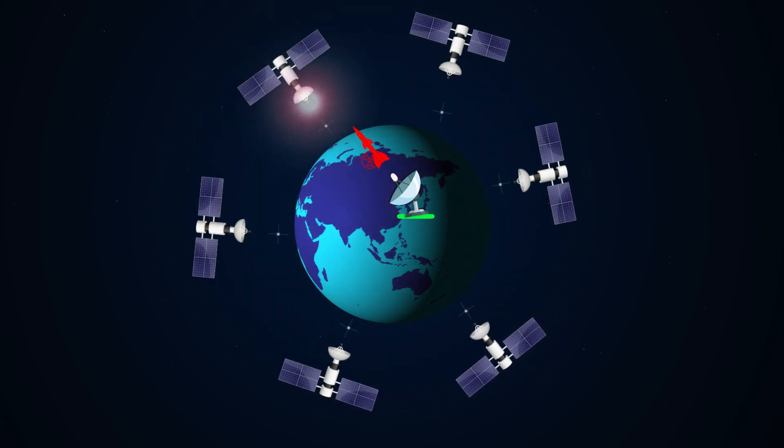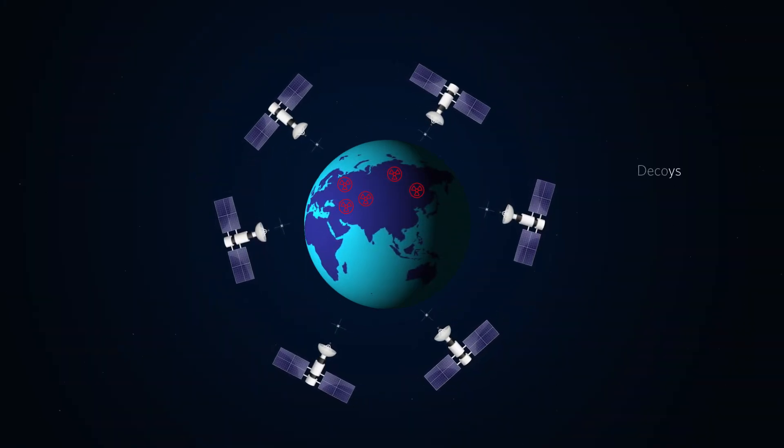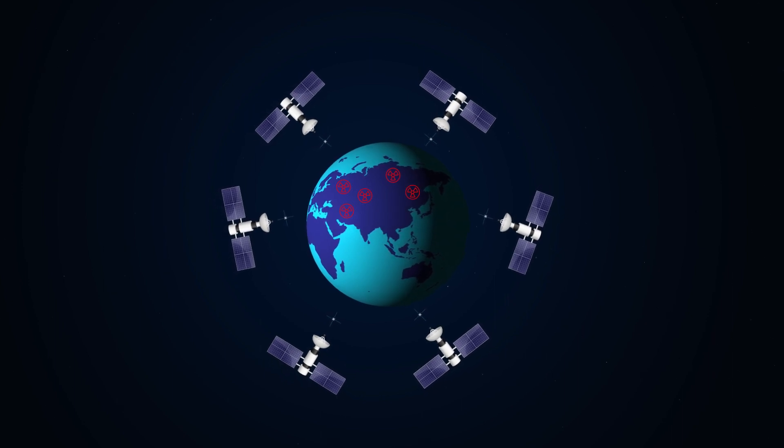The hider could use anti-satellite weapons to damage or destroy the seeker's satellites. The hider could also use decoys so that even if the seeker can track the launchers, they don't know which ones are real.